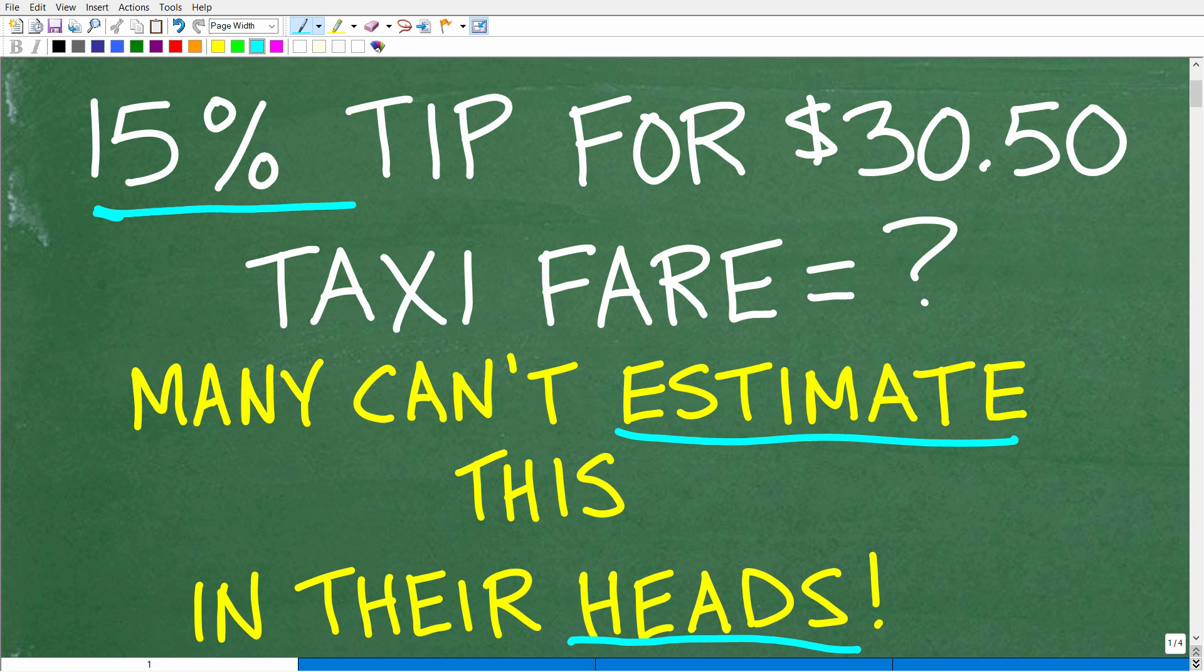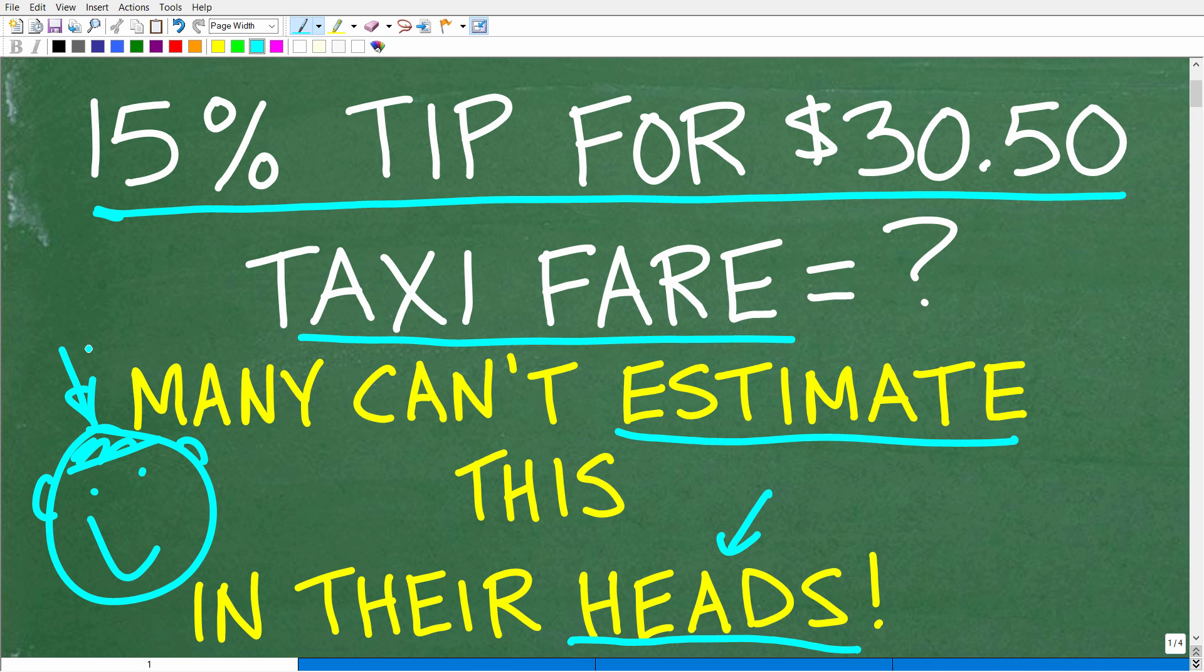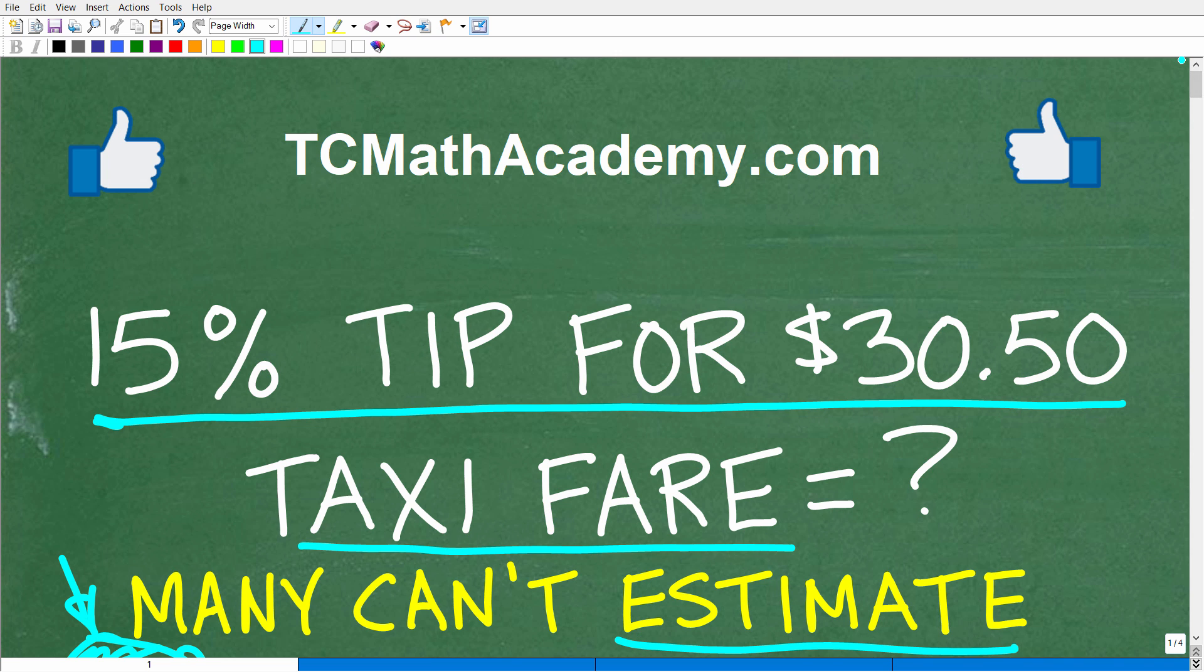A 15% tip for a $30.50 taxi fare is how much? So that is the problem, and no materials other than your supercomputer right up here, right between your ears. You're going to do this only using your brain. If you can figure this out, put your answer into the comment section. I'll show you the correct answer in just one second. Then we'll walk through exactly how we can easily calculate this using mental mathematics.